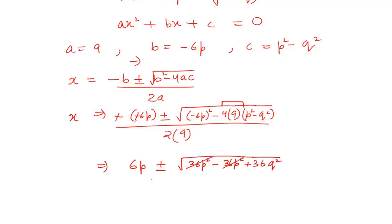So you have 6p ± under root 36q² over 18. Then you get 6p ± 6q, solving the under root.